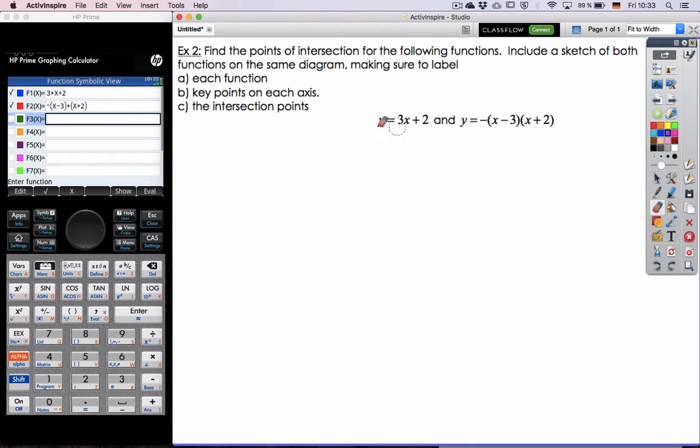So we've already gone ahead and put in 3x plus 2. Don't forget this little multiply symbol, otherwise you get a syntax error. And then here, it also needs to multiply between the two brackets, alright?